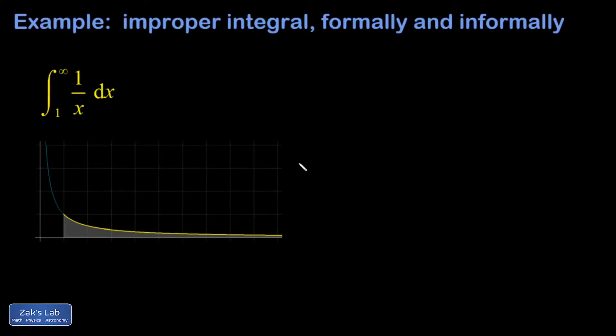Let's check out this improper integral informally and formally. So I have this curve 1 over x getting closer and closer to 0. And I'm trying to get the area under that all the way out to x equals infinity, so I'm just adding up area forever to the right.